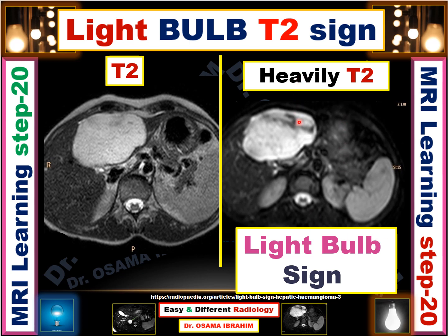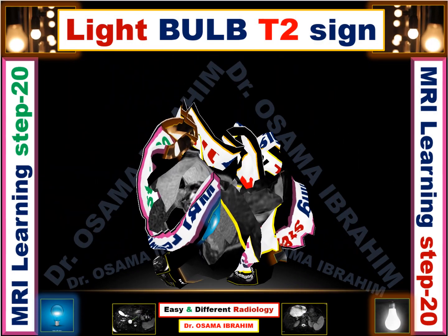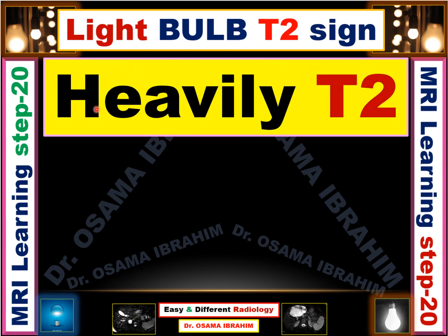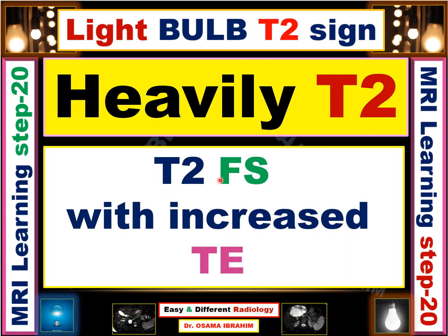The best MRI sequence to detect the light bulb sign is the heavily T2, achieved by increasing the TE (echo time). Using T2 fat suppression with an increased time to echo, you can reach the heavily T2 image.